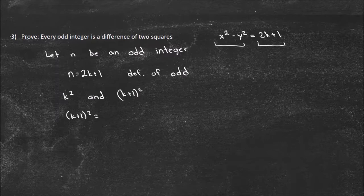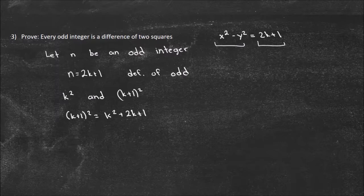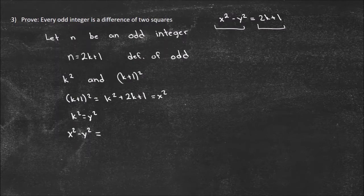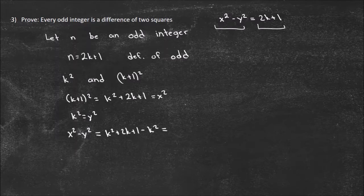So (k+1) squared, by FOILing, gives k squared plus 2k plus 1. Now if I let x squared equal (k+1) squared and y squared equal k squared, then x squared minus y squared equals (k squared plus 2k plus 1) minus k squared, which equals 2k plus 1 — exactly what I wanted to prove.